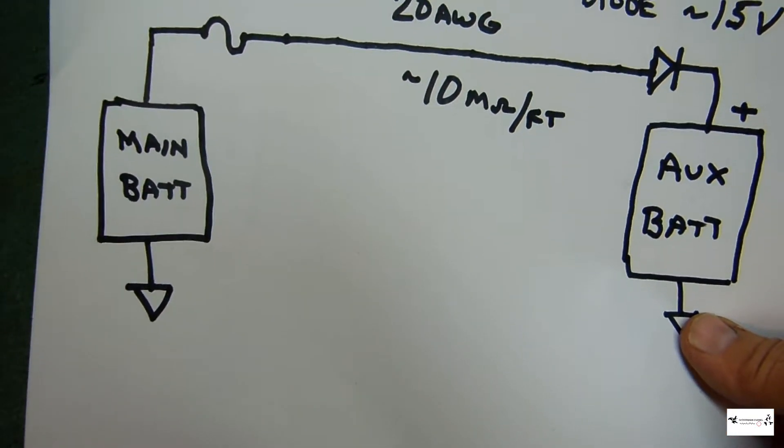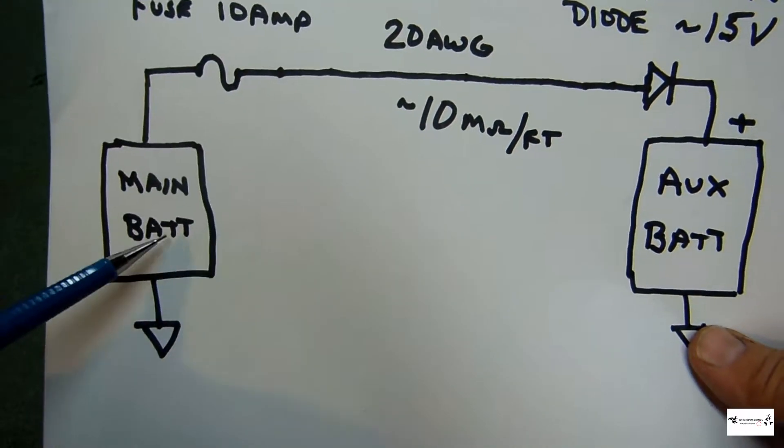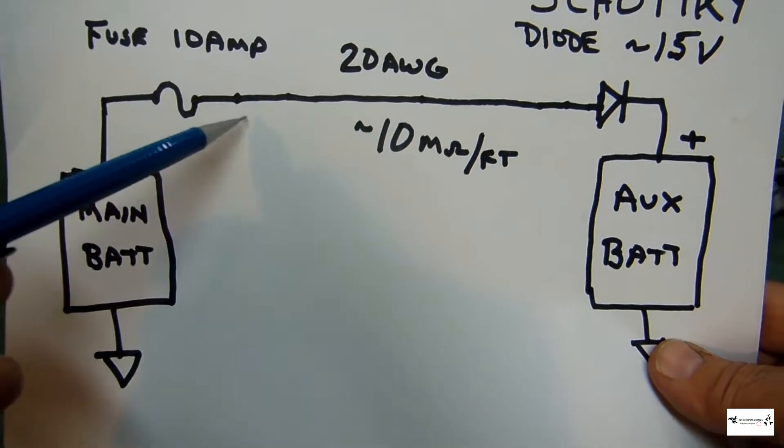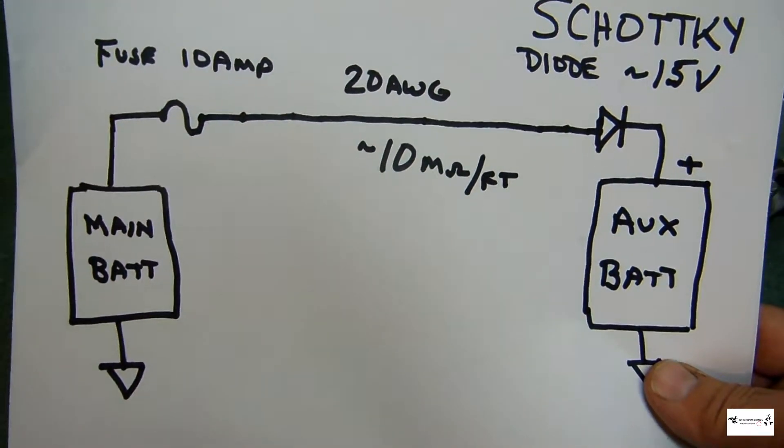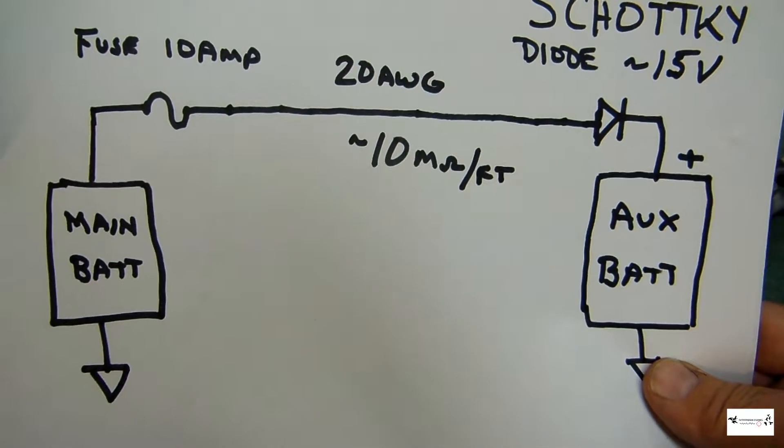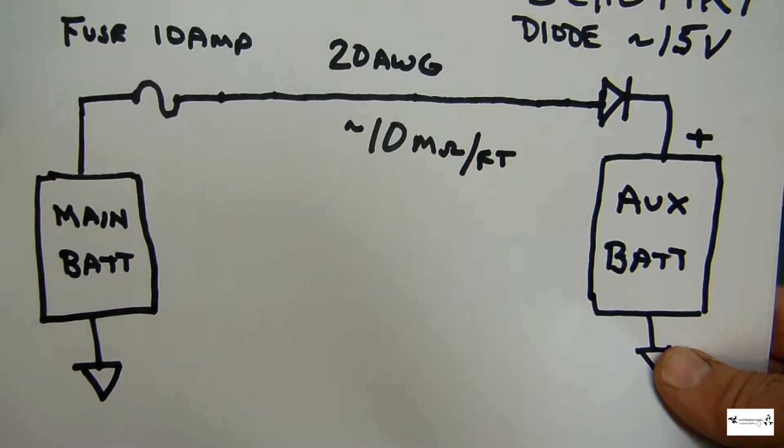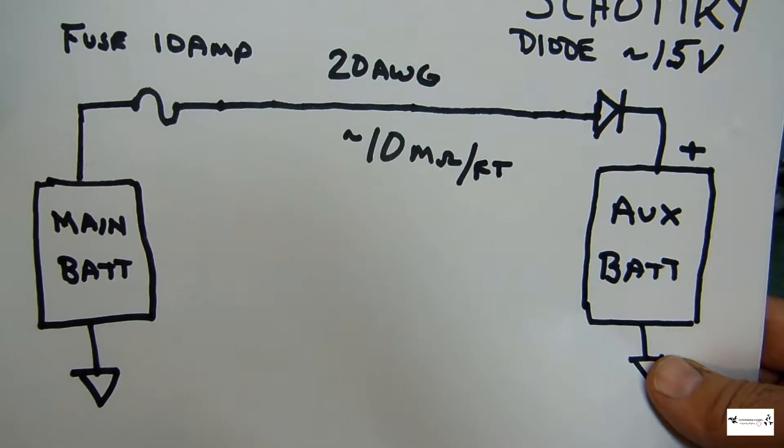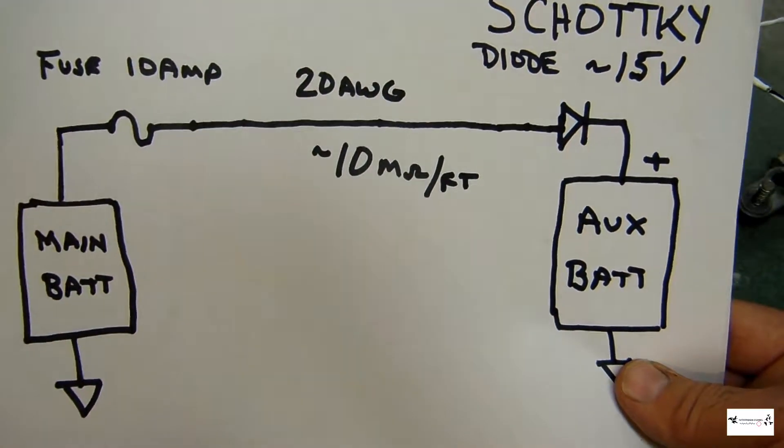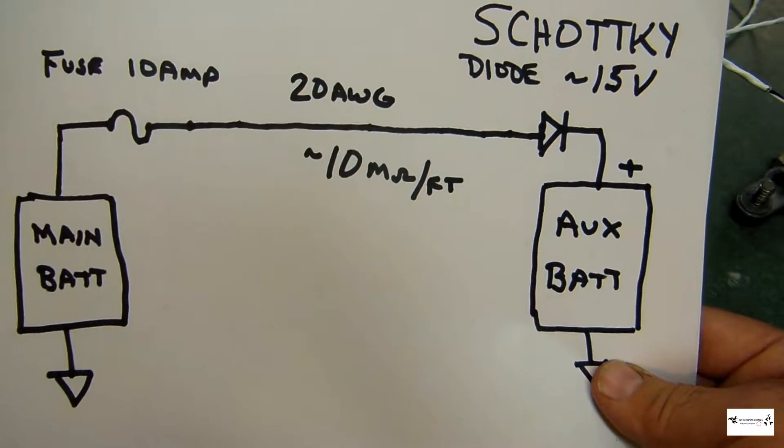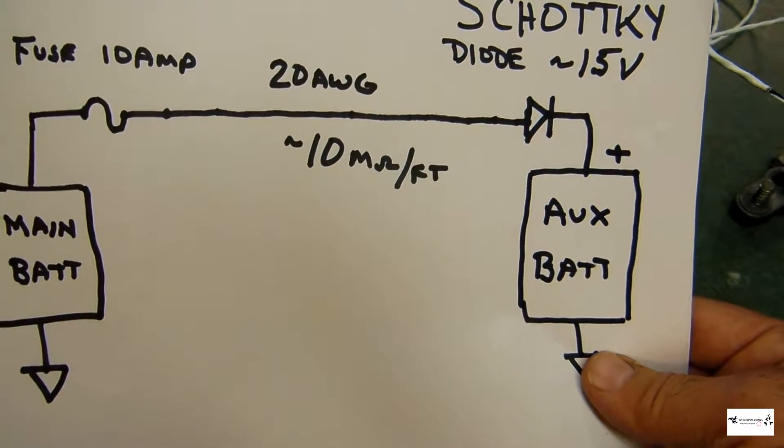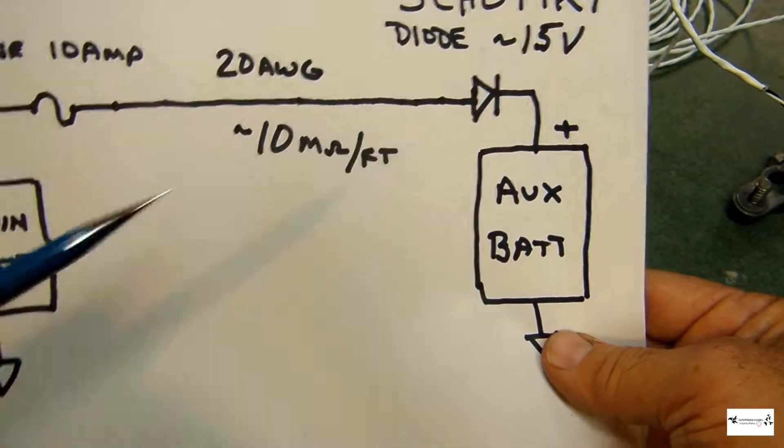We have a main battery, which is your vehicle battery. And then we go over to a fuse. Very important to have a fuse. In this case we're going to use about a 10 amp fuse. And then we're going to go to a length of wire, maybe about 8 feet long. And we want to use around a 22 gauge wire or a 20 gauge wire. The reason for this is we want a little bit of resistance in this particular piece of wire. 20 gauge wire has about 10 milliohms per foot, and that's helpful. Then we go over to a diode. In this case we're going to be using a Schottky diode. It's a low voltage drop diode with about a 15 volt breakdown rating. That's important because the lower you get that, the lower the voltage drop is when it's conducting. And then we're going to go over to our auxiliary battery. That's pretty much it.